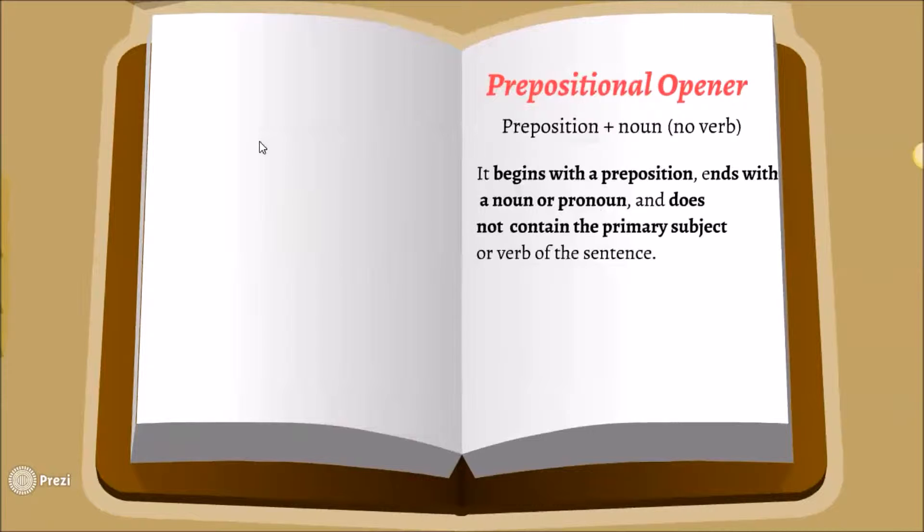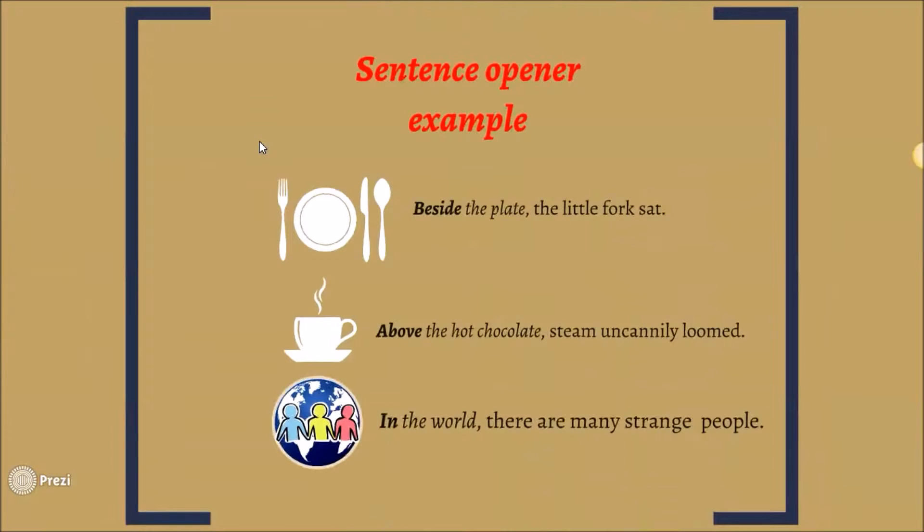So a prepositional opener is a preposition plus a noun. It begins with a preposition, ends with a pronoun or noun, and does not contain the primary subject of the sentence. Here's some examples.